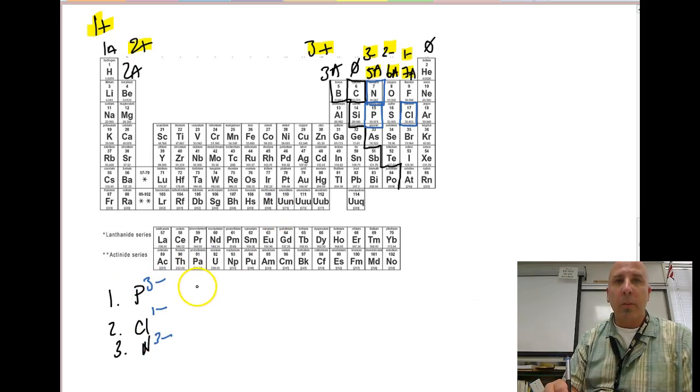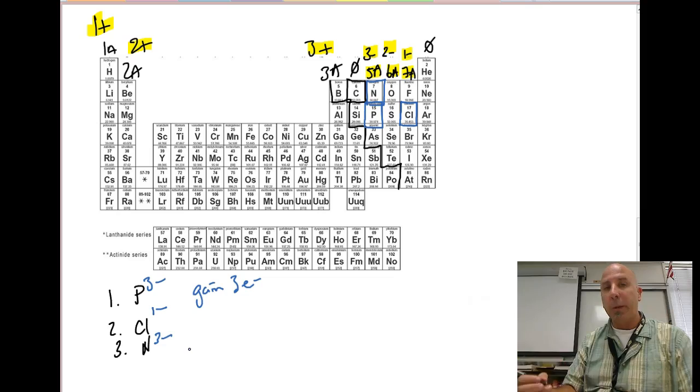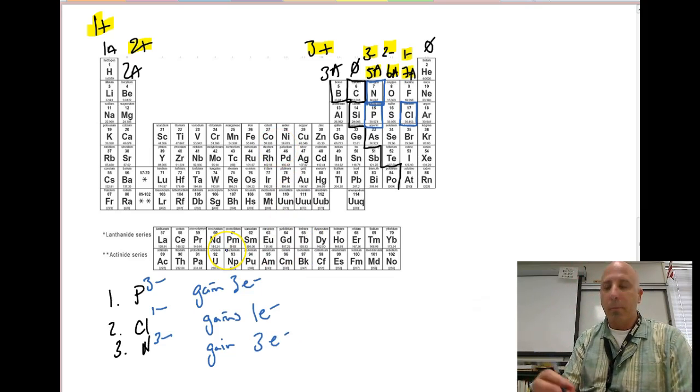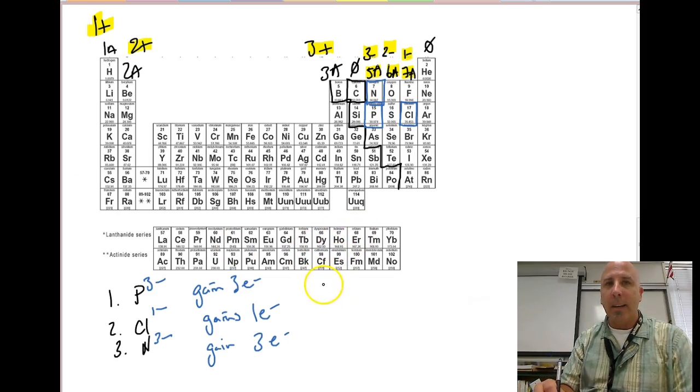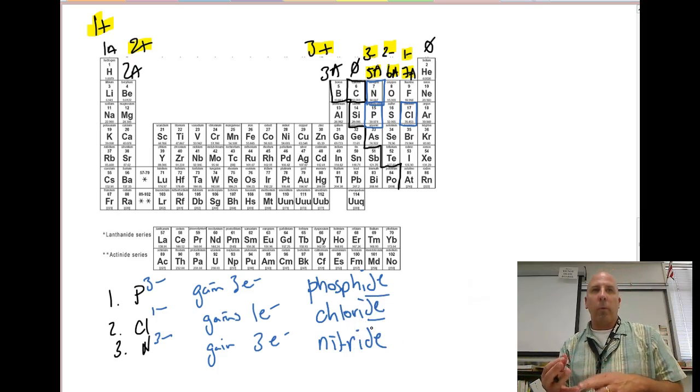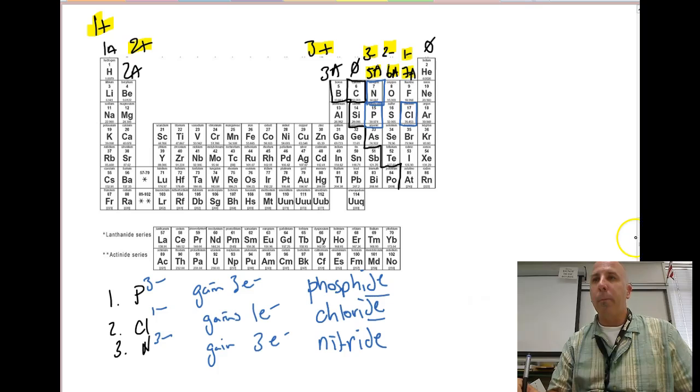What does this mean? 3- means that phosphorus gains three electrons, because electrons are negative, and if you gain electrons, you become more negative. Chlorine gains one electron, and nitrogen gains also, like phosphorus, three electrons, because they're both in the same exact group, that 5A group. If we're going to name these, on nonmetals, we have to add the -ide ending, so we're going to call this phosphide. We're going to call this chloride, -ide ending once again. And the last one, nitride. And that's how we can tell on our representative elements, that's 1A, 2A, 3A, 5A, 6A, 7A, how to calculate the charge and how to name those ions.